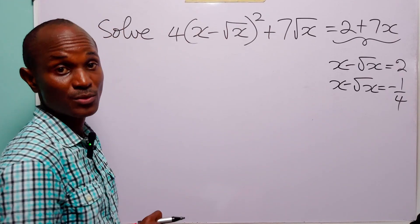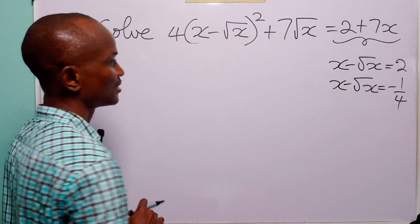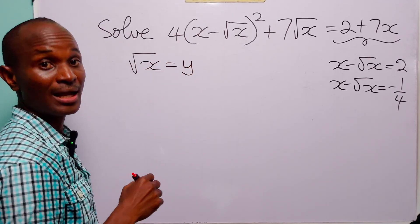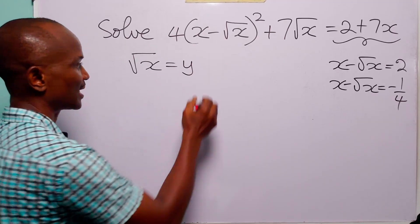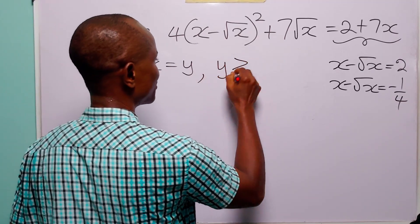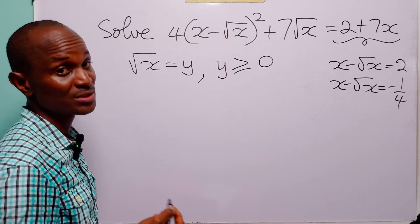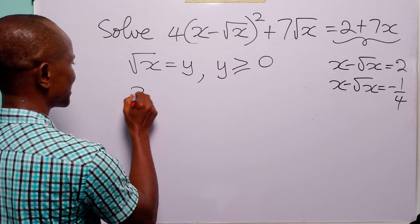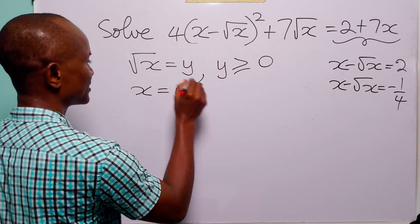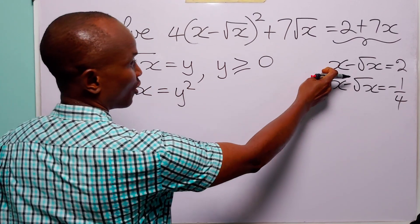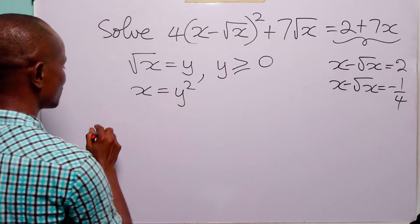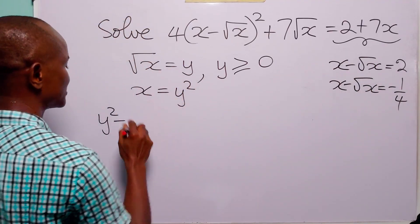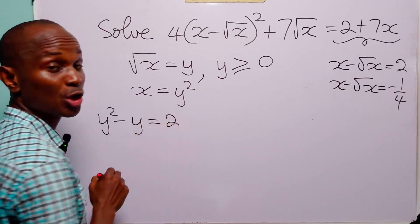Now, to solve these two equations, we are going to do one more substitution. So, let the square root of x be equal to y. And, of course, you know that this comes with the condition that y must be greater than or equal to 0, because a square root cannot be negative. Now, if you square both sides of this equation, you have that x is equal to y squared. Coming to the first equation, we have x — that is y squared — minus root x, which is y, is equal to 2.